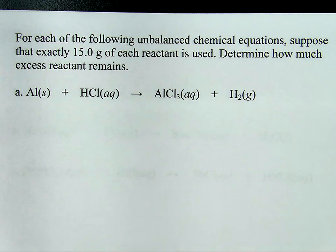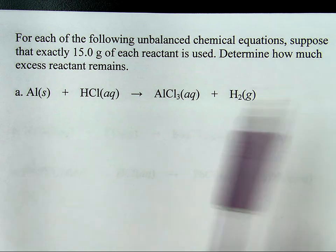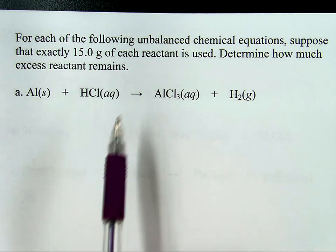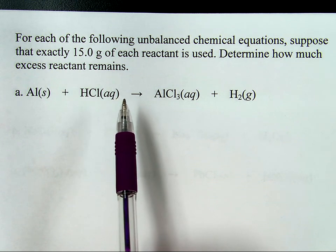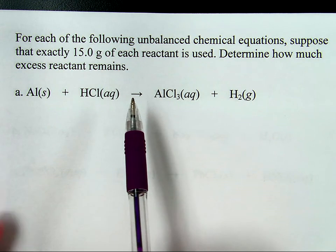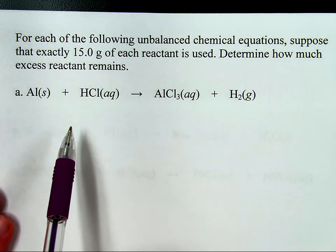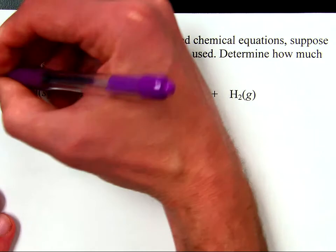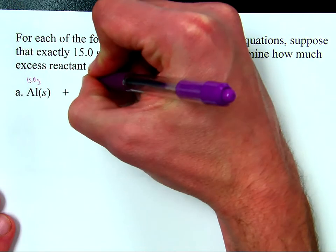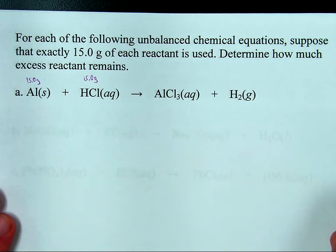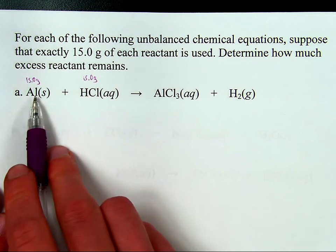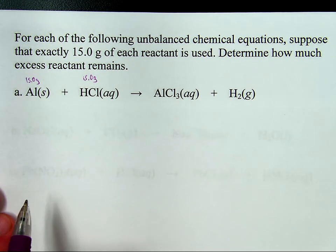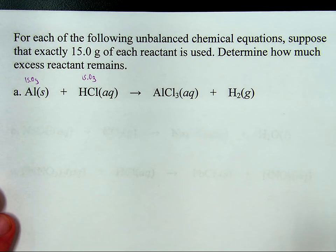Let's talk about how you go about solving one of these questions where you need to determine the amount of excess reactant that remains. According to this scenario, you start with 15 grams of each reactant, and you're going to find that one of these gets used up completely and the other will have some left over. The question is: which one, and how much?